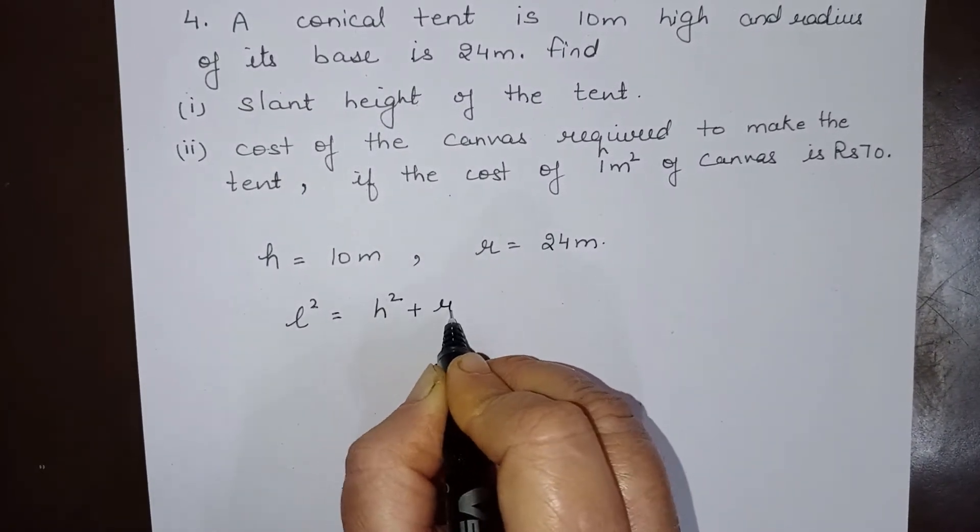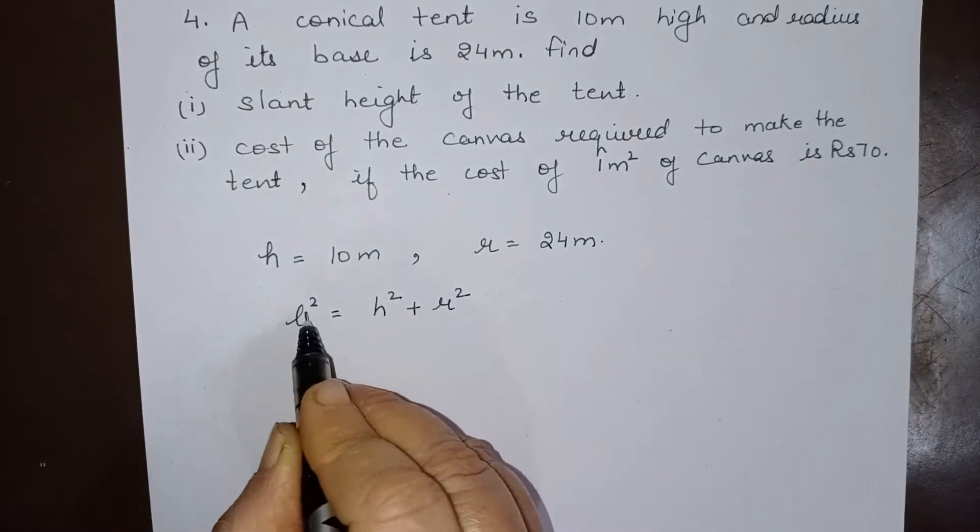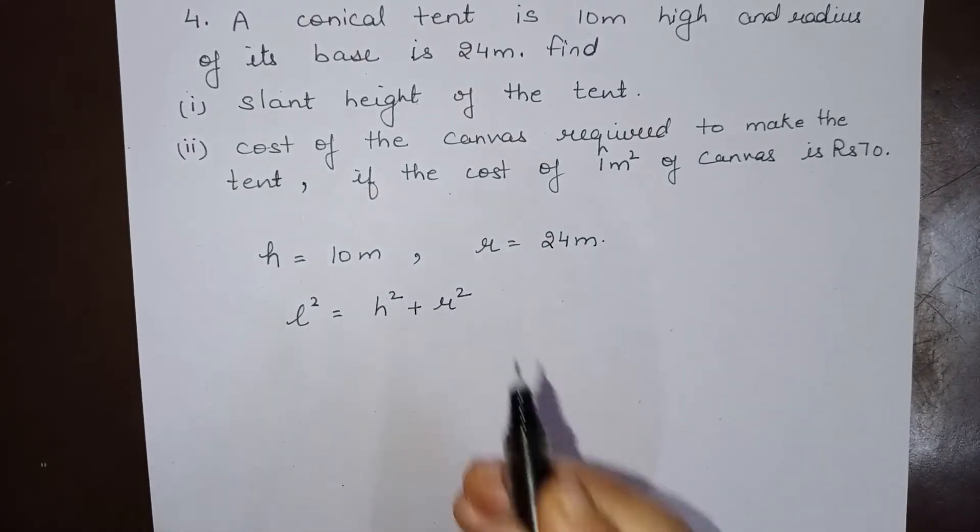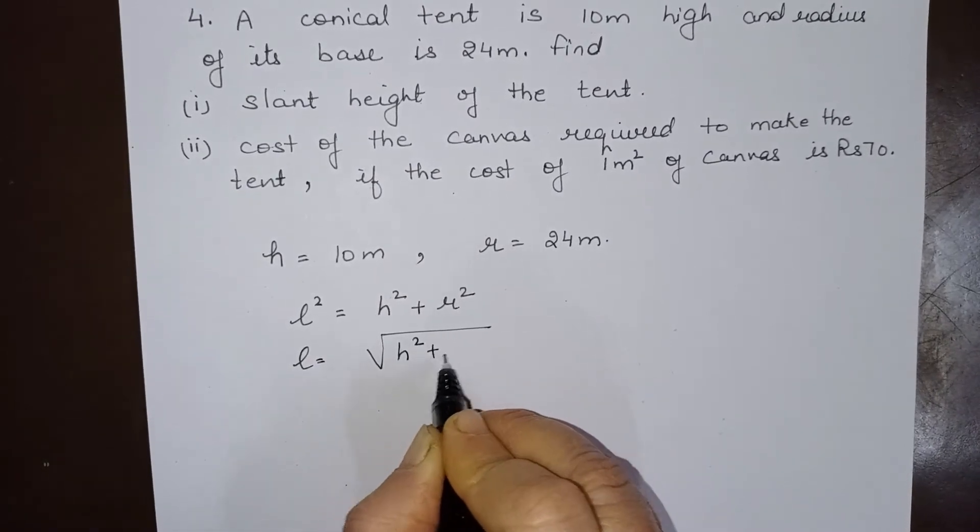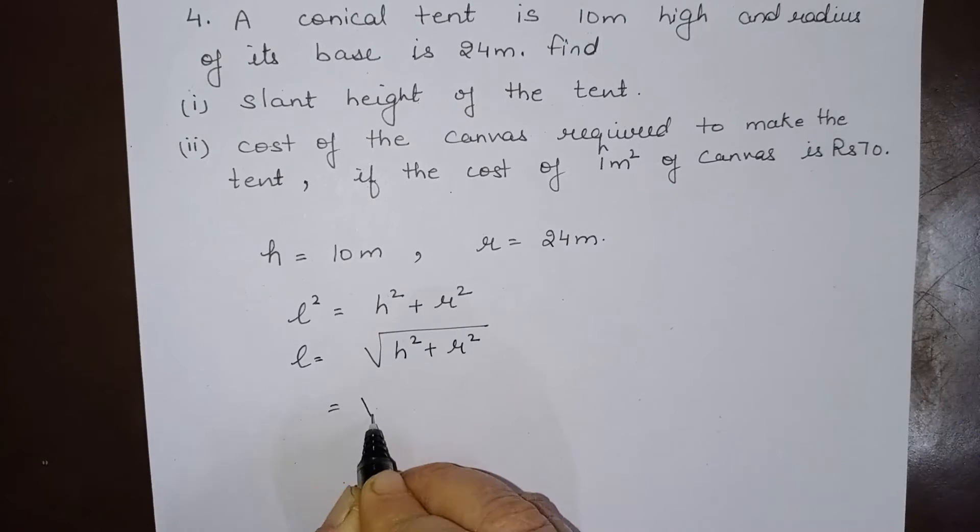which is h square plus r square. So this is the relation between slant height, height, and radius of the cone. Or we can write l is square root of h square plus r square, so this is square root